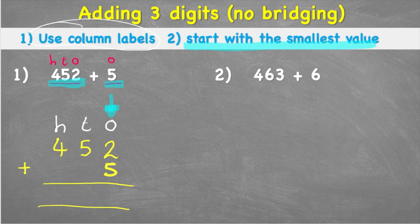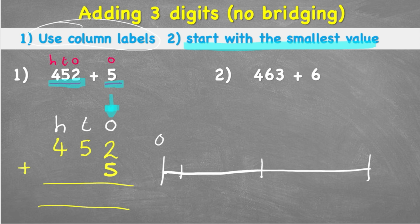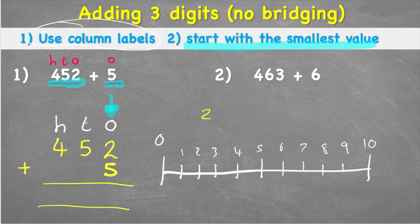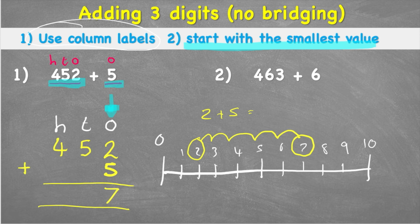If I don't know how to do that, I can use a number line. I'll set up a number line with 0 through 10. My question is 2 add 5, so I start on 2 and make 5 jumps: one, two, three, four, five — landing on 7. So 2 plus 5 equals 7.